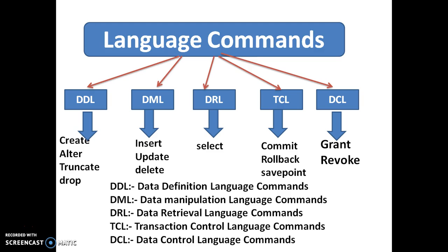DCL commands include GRANT and REVOKE. These commands are used to provide or deny privileges on the database. For example, if you want to give permissions to create tables, views, or procedures, or if you want to deny those permissions, you use GRANT and REVOKE respectively.